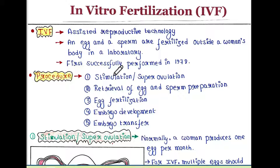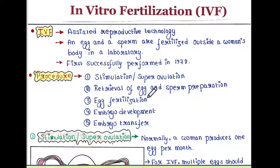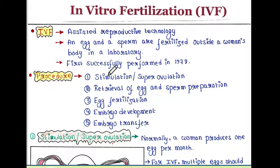IVF was first successfully performed in 1978. The steps of IVF are: first, stimulation or super ovulation; second, retrieval of egg and sperm preparation; third, egg fertilization; fourth, embryo development; and fifth, embryo transfer. We will talk about them one by one.